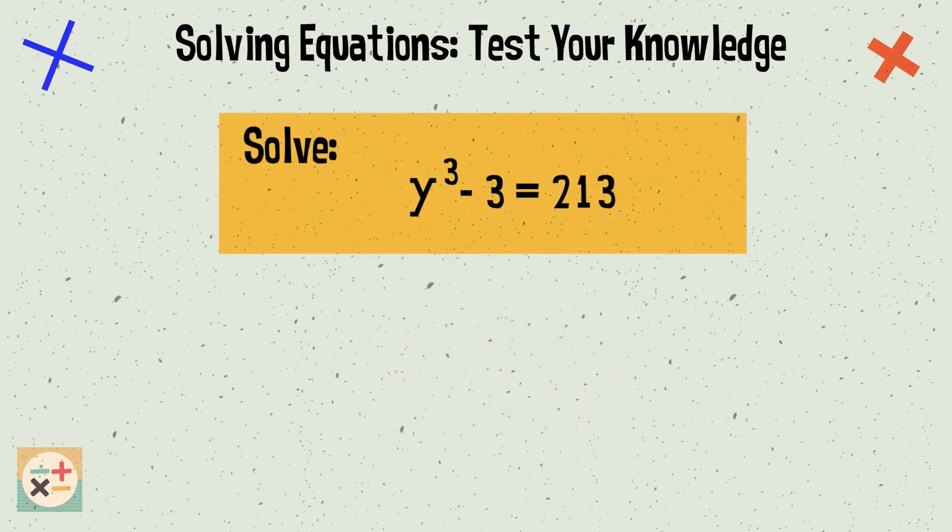Question 7. Solve y cubed minus 3 equals 213. y equals 6.